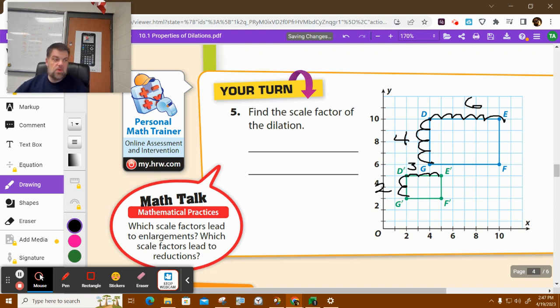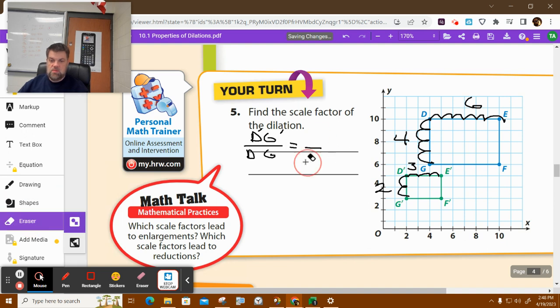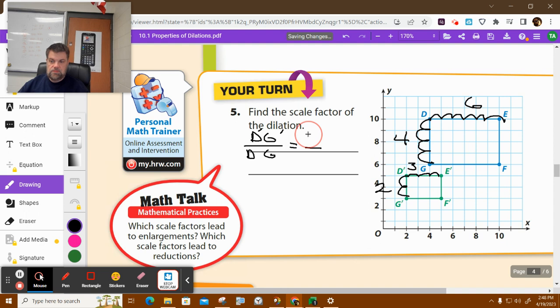You're going to compare the preimage to the image. So is it 2 over 1 or 1 half? Well, we have to compare DG over D prime G prime. So that would be 4 over 2. Oh, no, wait. I'm sorry. I wrote that down backwards. It's got to be the image over the preimage. So these would be reversed. What is that reduced down to? So we would have a scale factor of 0.5. Does that make sense?